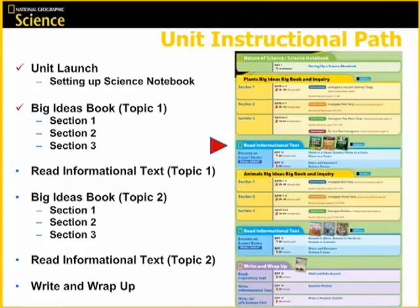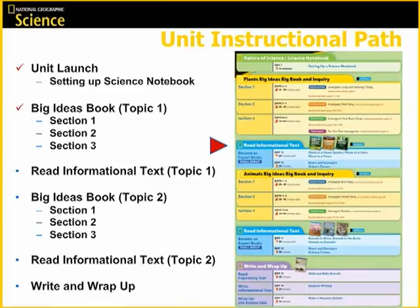Now that we've looked at the instruction for the unit launch and the chapters, let's move to the blue tab, Read Informational Text. This section focuses on connecting science and literacy and helps students move deeper into the content at their own instructional level. Connecting science and literacy is a key aspect of the National Geographic Science program. There is a synergistic effect of learning science content through informational text literacy activities — the end result is that both science and content reading skills improve.